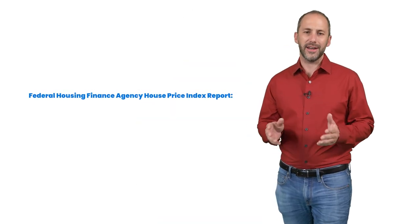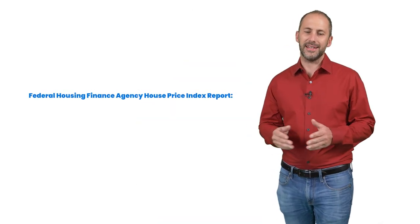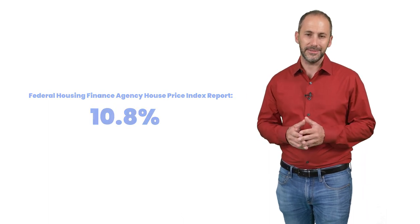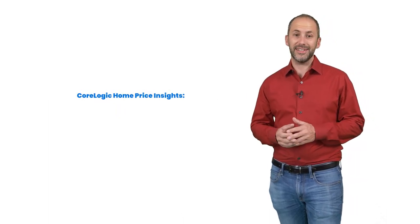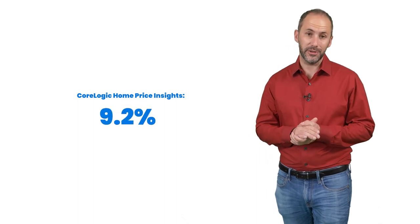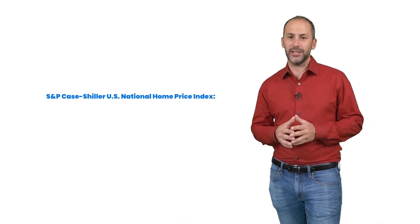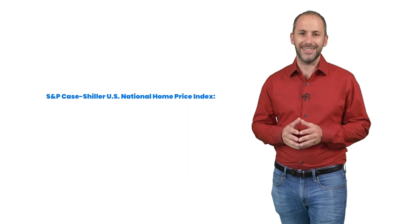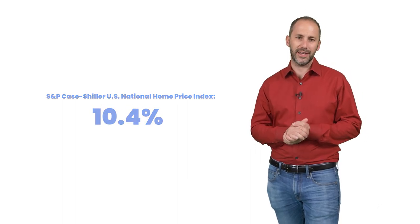Here are the year-end home price appreciation numbers from the FHFA and two other prominent pricing indexes. Federal Housing Finance Agency House Price Index reported 10.8%. CoreLogic Home Price Insights were at 9.2%. And S&P Case-Shiller U.S. National Home Price Index was at 10.4%. The past year was truly a remarkable time for homeowners as prices appreciated substantially.